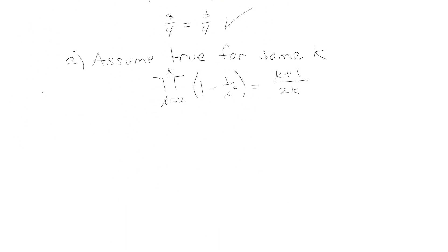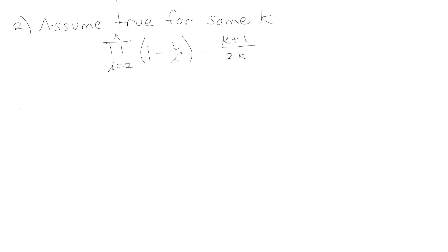So now that we've assumed that was true, the next thing we're going to do is set a goal to show it's true for k plus 1. Our goal is going to be to show that this product from i going 2 to now k plus 1 of (1 minus 1 over i squared) equals (k plus 1 plus 1) over (2 times k plus 1). Everywhere here that I had an n I replaced the n with a k, same thing here everywhere I had a k, I'm going to replace it with a k plus 1.